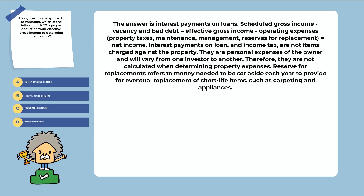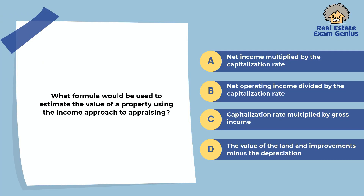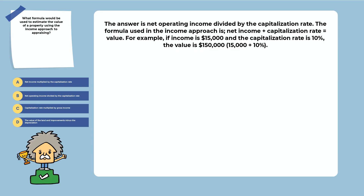Reserve for replacements refers to money set aside each year to provide for the eventual replacement of short-life items such as carpeting and appliances. What formula would be used to estimate the value of a property using the income approach? Net income multiplied by the capitalization rate, net operating income divided by the capitalization rate, capitalization rate multiplied by gross income, or value of land and improvements minus depreciation. The answer is net operating income divided by the capitalization rate. For example, if income is $15,000 and the capitalization rate is 10%, the value is $150,000.